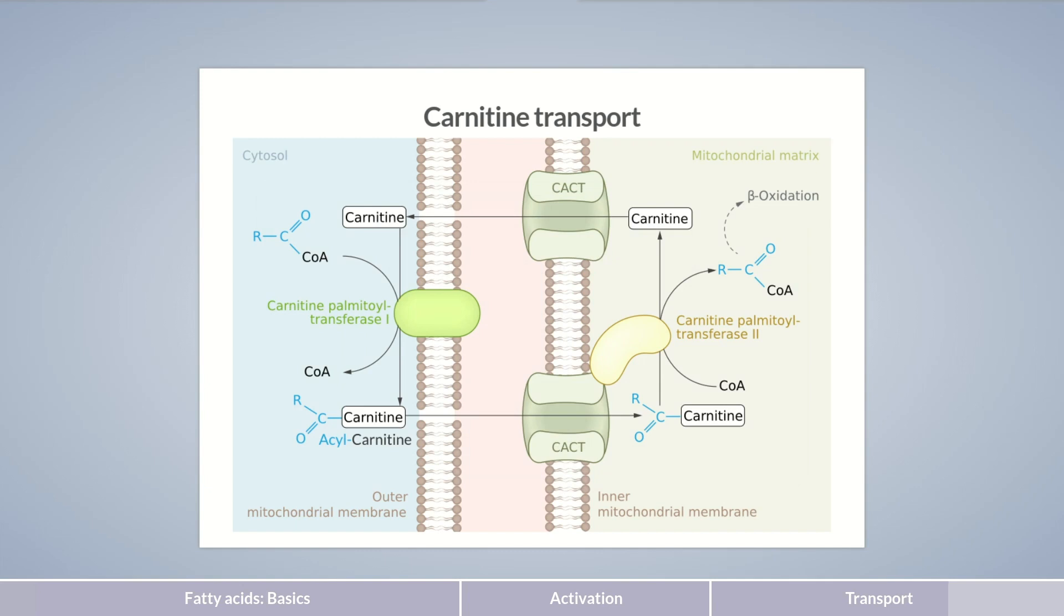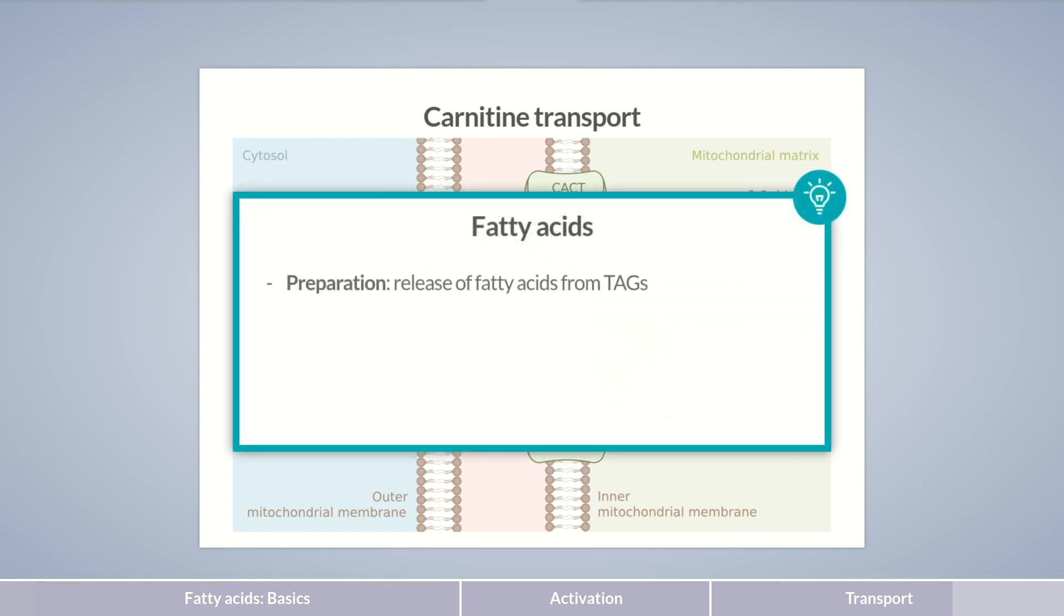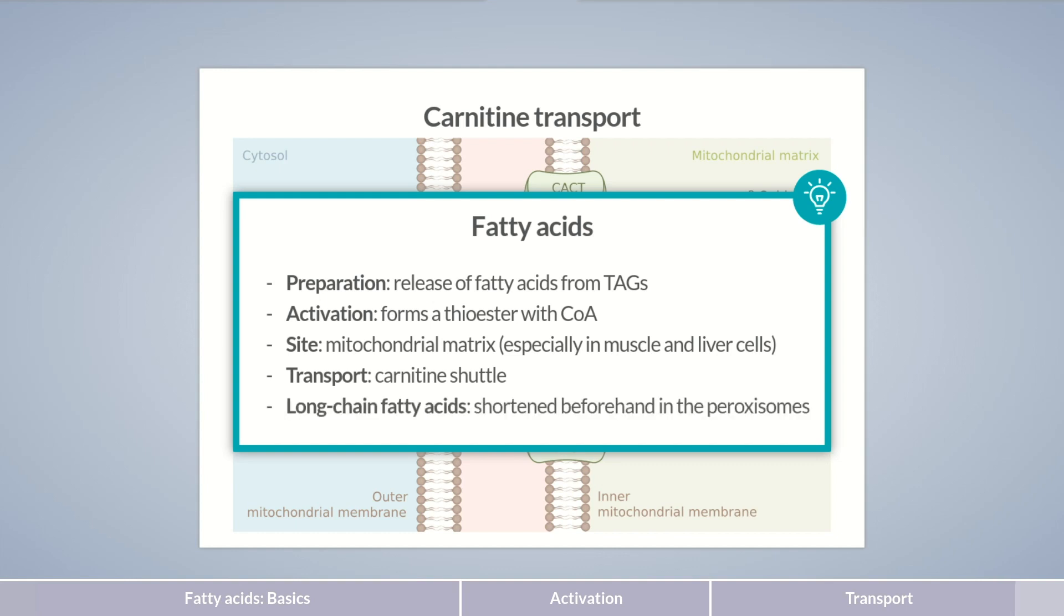Now let's summarize the most important take-home points. Fatty acids need to be initially released from triacylglycerols for degradation. Fatty acids are converted to coenzyme A thioesters and are thereby activated. Beta-oxidation occurs primarily in the mitochondria of muscle and liver cells. Acyl-CoA is transported across the inner mitochondrial membrane into the matrix by a carnitine-acylcarnitine translocase. Long-chain fatty acids are shortened in the peroxisomes before their final degradation in the mitochondria.